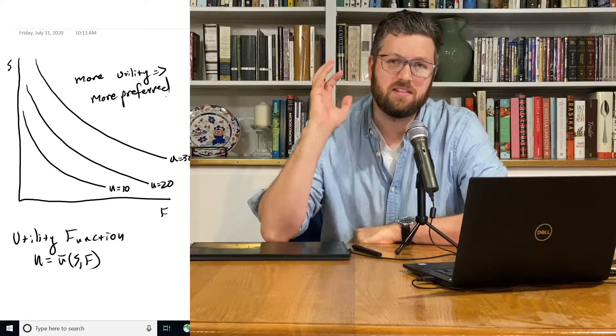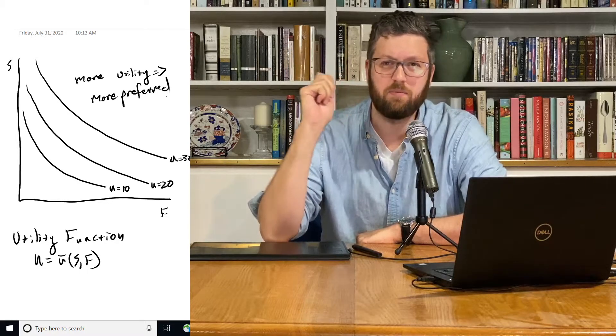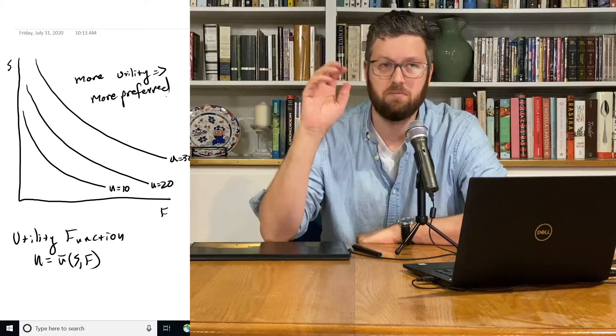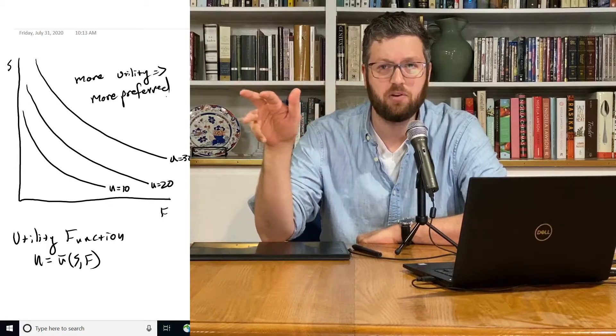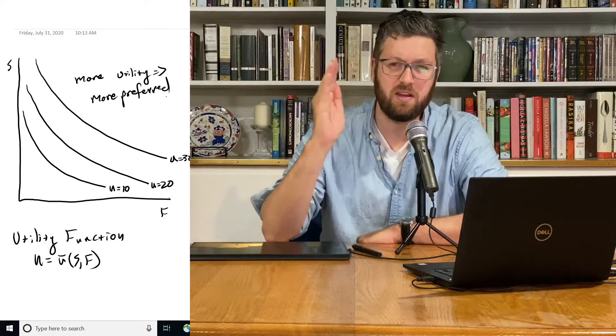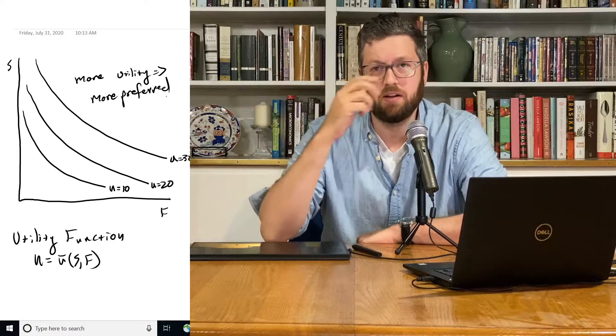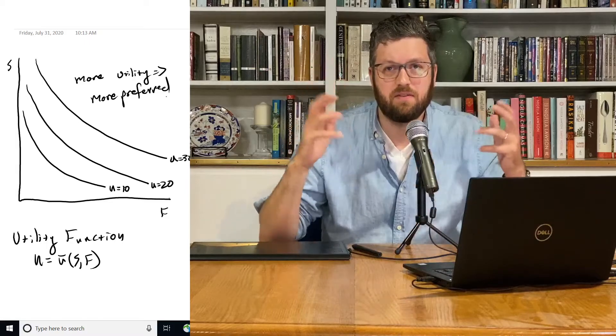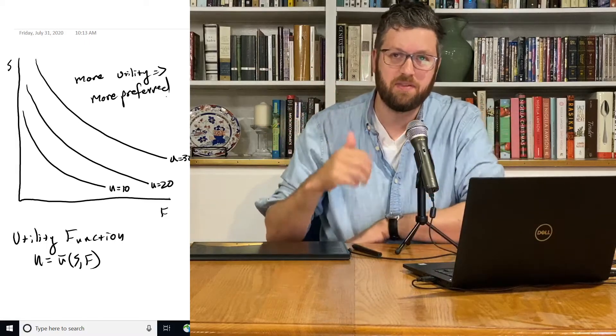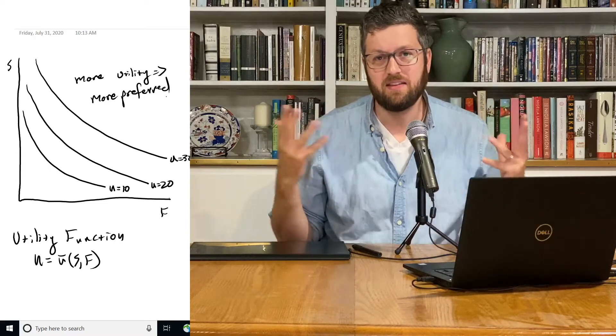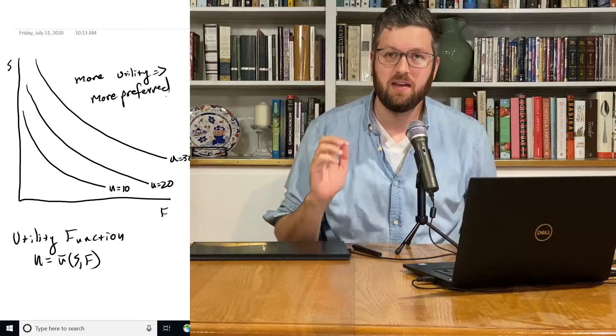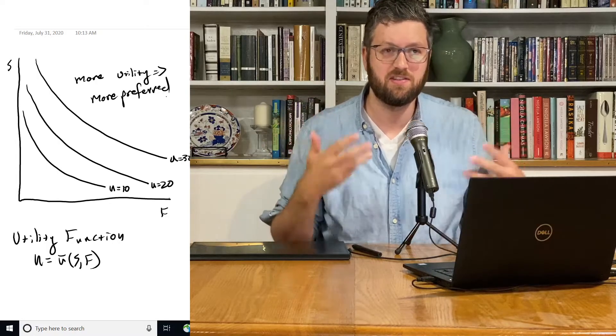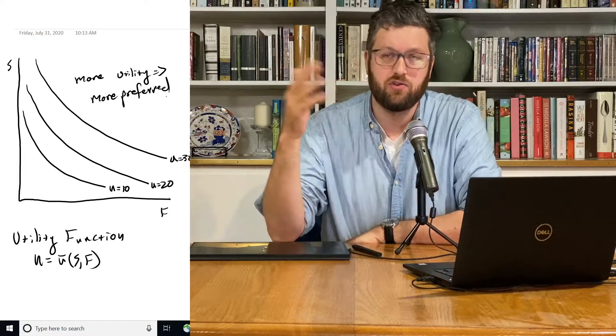But it's not necessarily supposed to capture anything real. The production function captures something you can really measure. We can measure how much labor you have, how much capital you have, and then how much output you have. So we have three actual observable quantities. The utility function uses these goods, things that people consume. But the output is not anything that we can measure, this utility. All we really observe is what people choose. We kind of choose a function that is consistent with their choices.